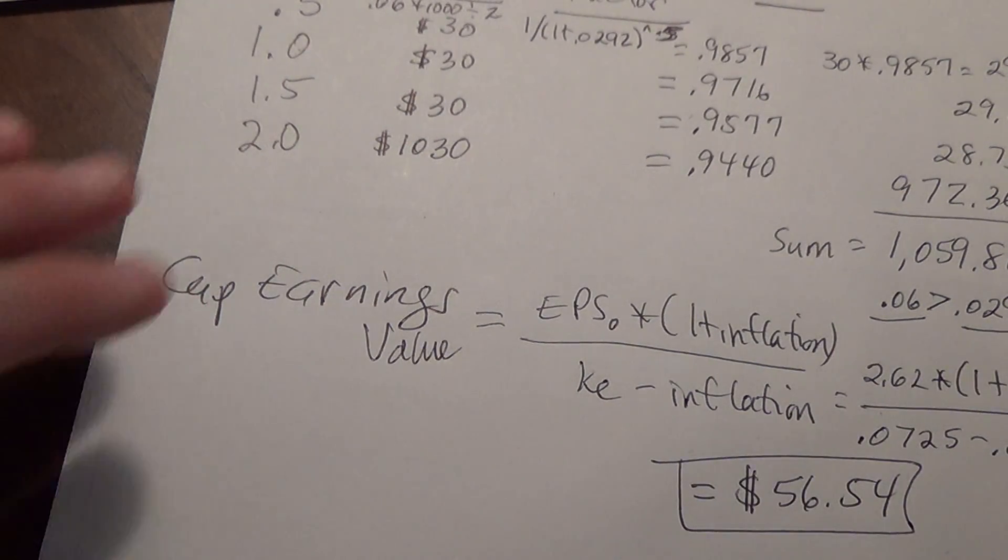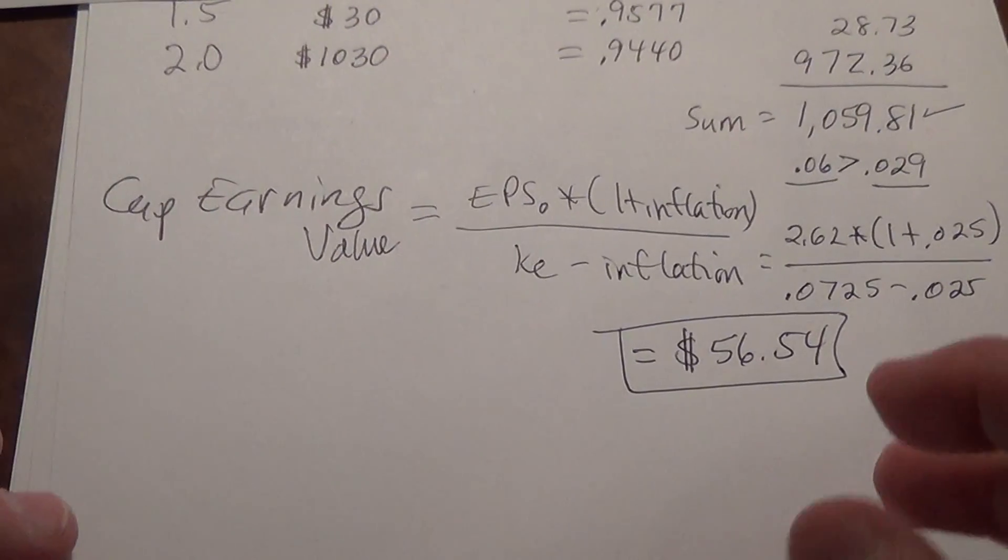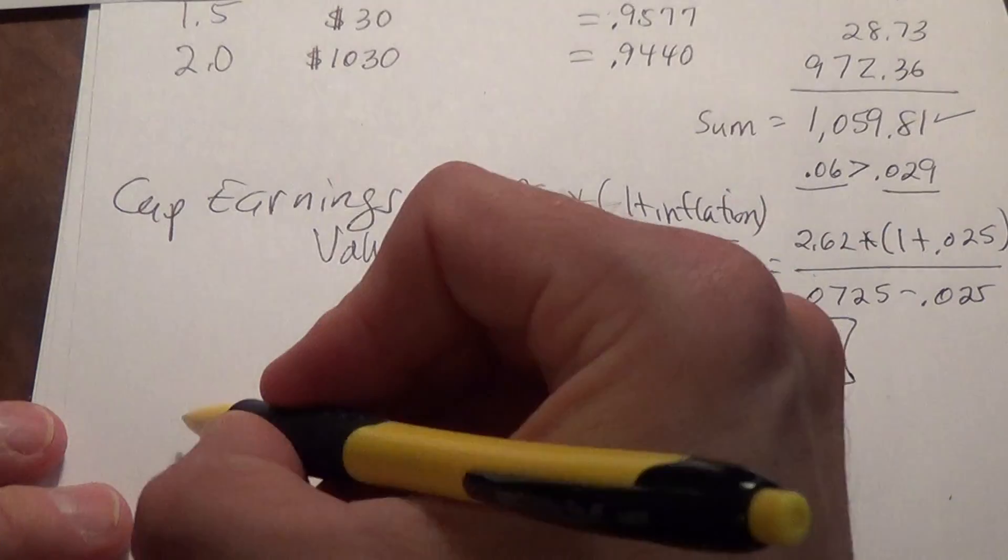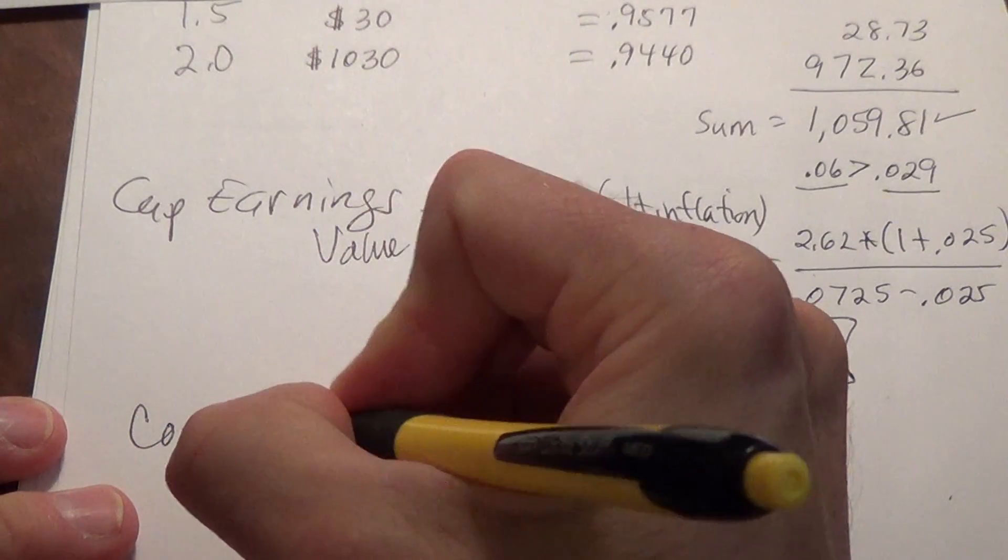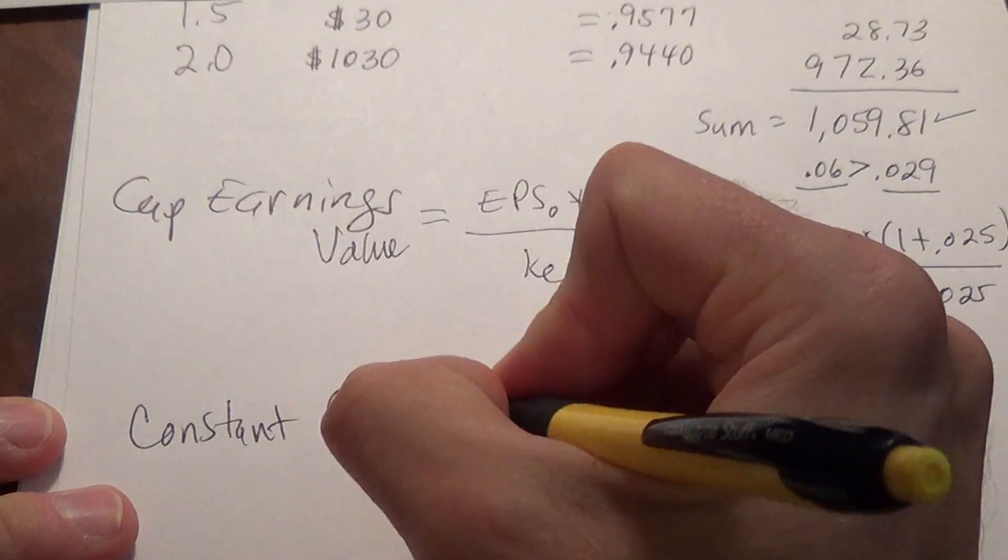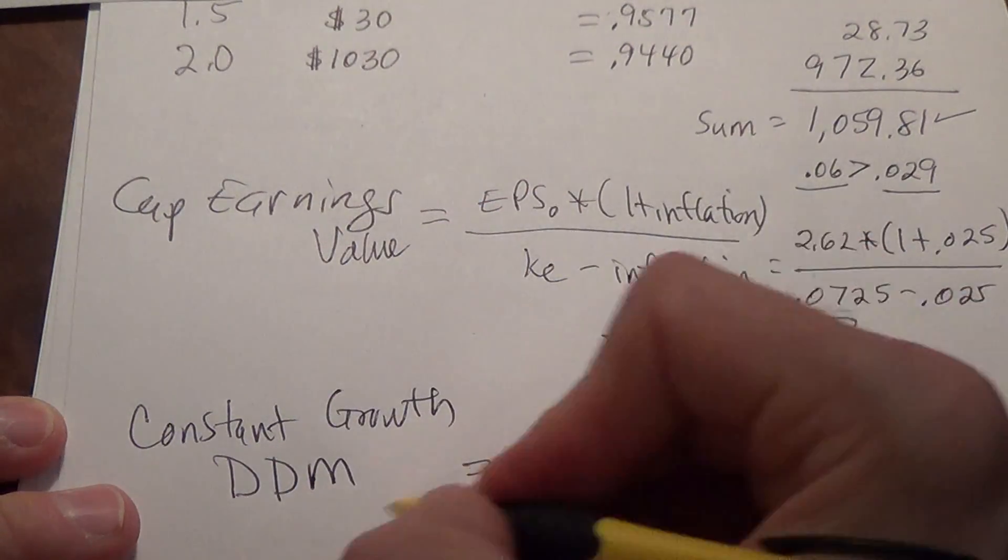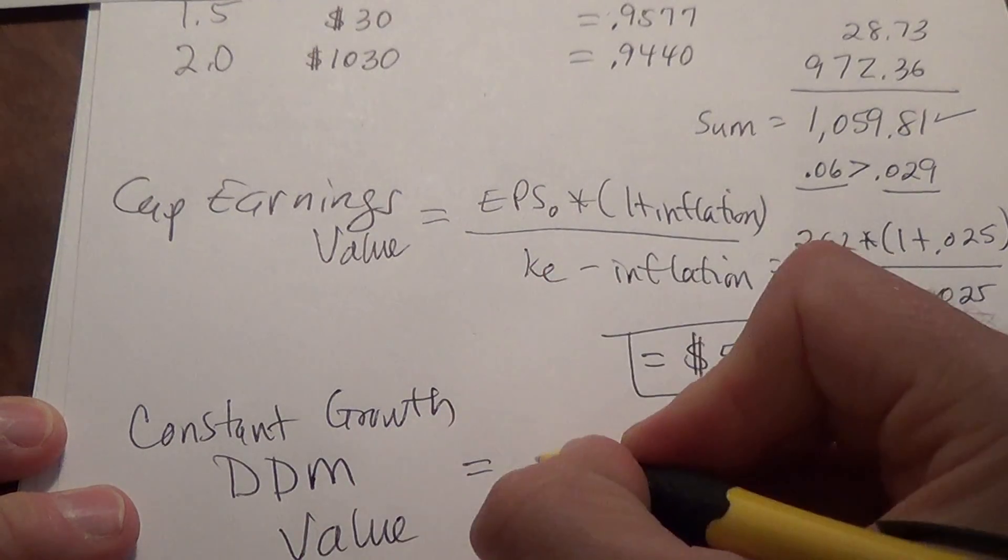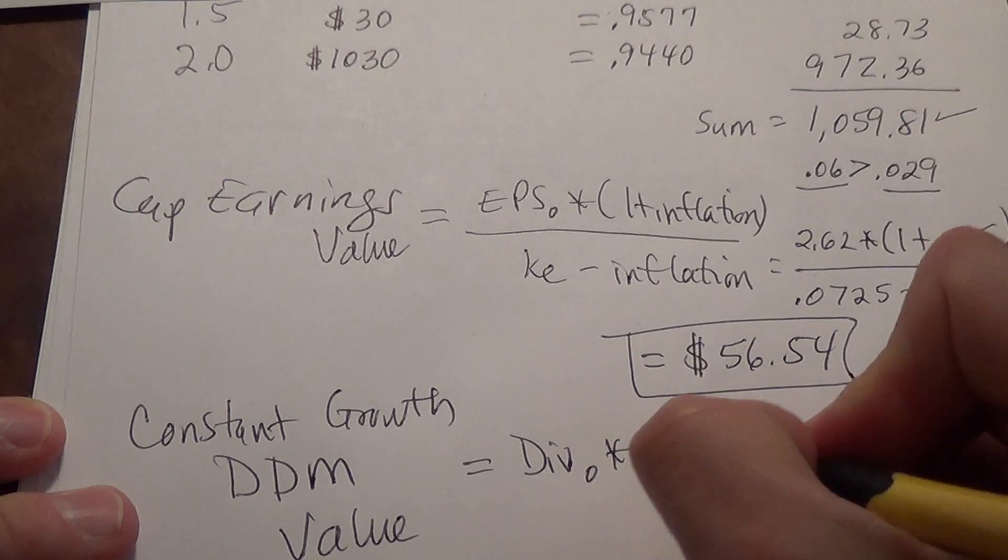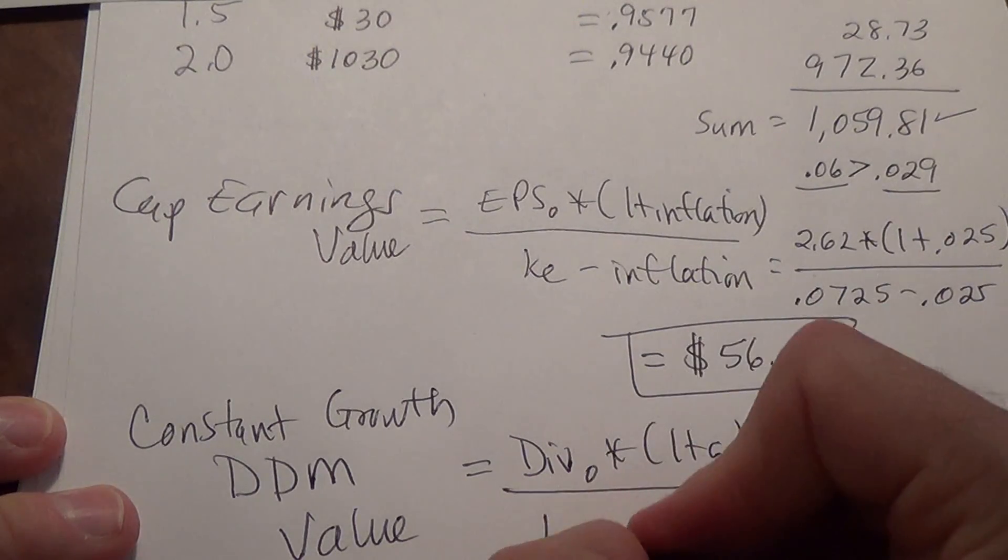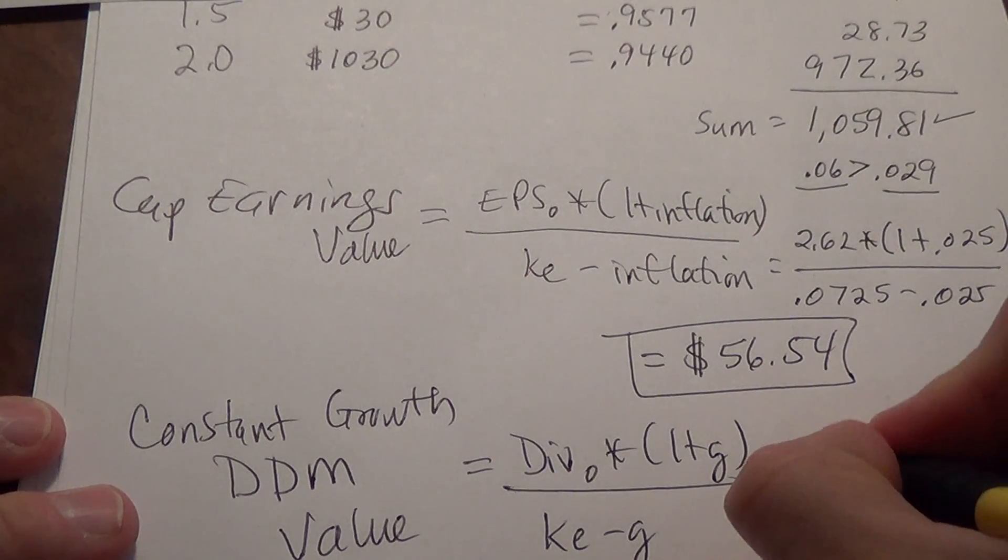So there's the capitalized earnings. The next model we'll do is the constant growth model, also known as a Gordon growth model or dividend discount model. So constant growth dividend discount model, DDM. The value of the stock equals dividend zero times one plus your growth rate divided by KE minus G. In this case, our dividend zero again was 0.62.